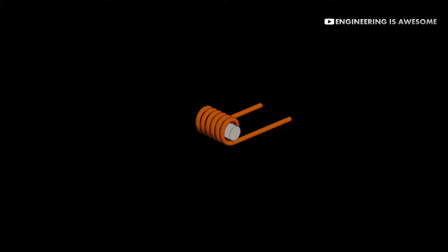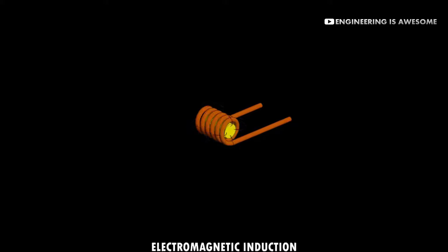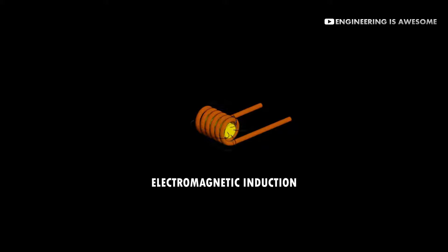Induction heating is a process through which we can heat an electrically conductive material by placing it within an alternating magnetic field. In this method, heat is generated by the combined efforts of electromagnetic induction as well as Joule's law of heating. Let's see how this works.